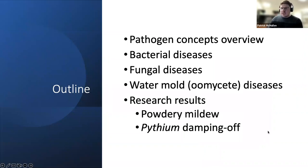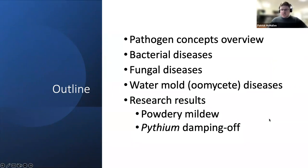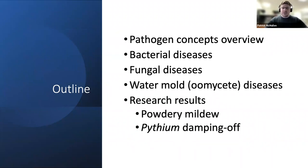I'd like to give a general overview of what I'll be covering. I'll begin with a brief pathogen concepts overview, then move into examples of bacterial diseases, followed by fungal diseases — our most common diseases on hemp — then water molds or oomycete pathogens. Finally, I'd like to share some research results from experiments conducted here at Cornell, including my own research on Pythium damping off.